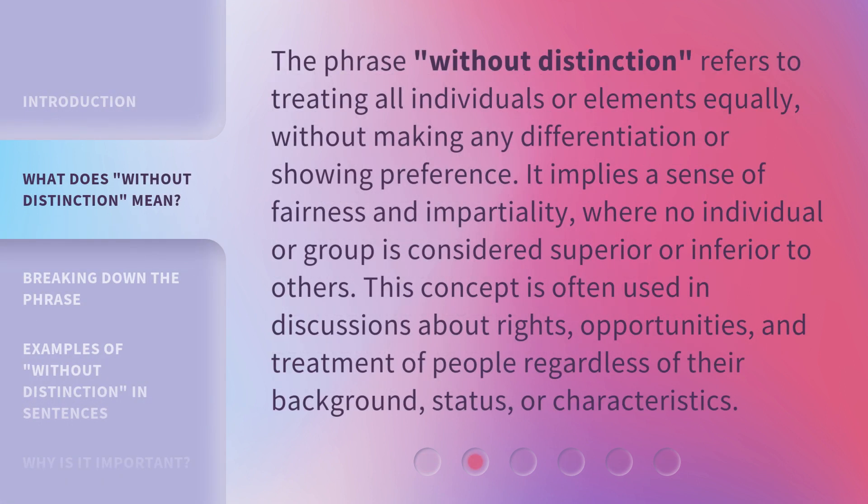The phrase 'Without Distinction' refers to treating all individuals or elements equally, without making any differentiation or showing preference. It implies a sense of fairness and impartiality, where no individual or group is considered superior or inferior to others. This concept is often used in discussions about rights, opportunities, and treatment of people regardless of their background, status, or characteristics.